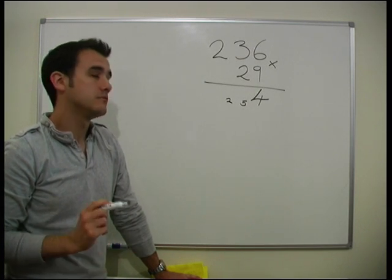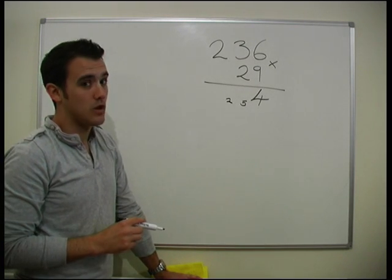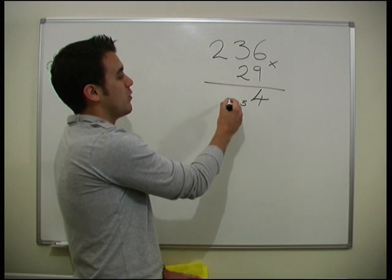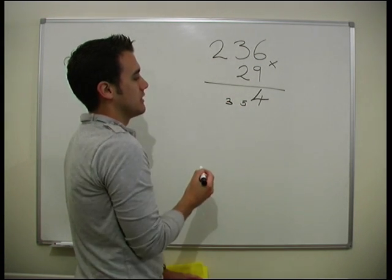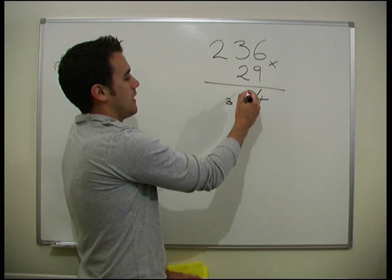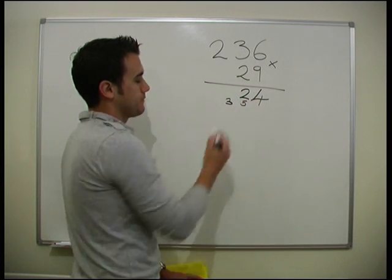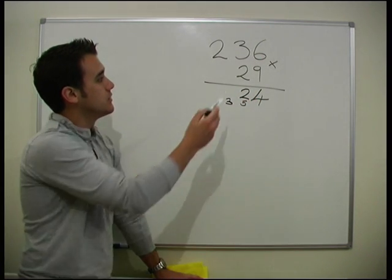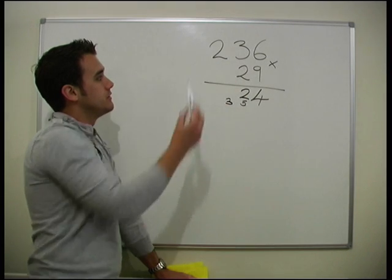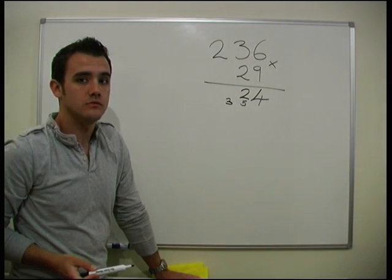Gives us 12. So we actually have another 1 carrying over. So we need that to be a 3, and we have a 2 here. Okay. So now we do 9 times by the 2. Gives us 18.